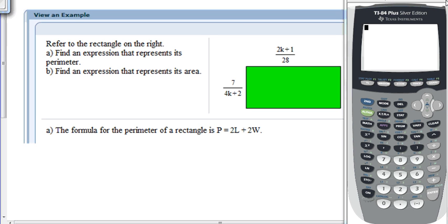This problem is from Quiz 3, sections 6.4 and 6.6, similar to your problem number 10. It says, refer to the rectangle on the right, and we can see that we have a rectangle over here colored in green.